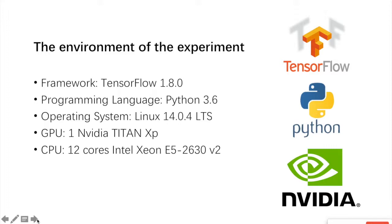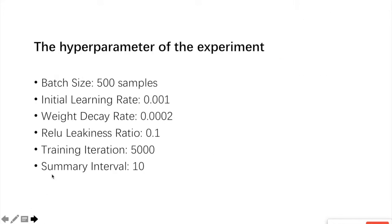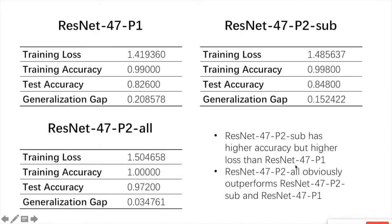The environment of our experiment is shown on screen. We use one GPU, which is an Nvidia Titan XP, to train our model, and we use the framework TensorFlow version 1.8 to build our ResNet47. The hyperparameters are also shown on screen. We set the batch size as 500 samples per iteration, and we set the initial learning rate as 0.001. We train three different models for 5,000 iterations.